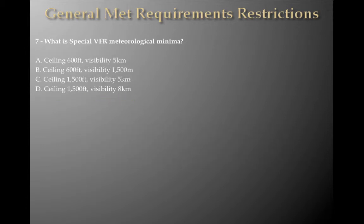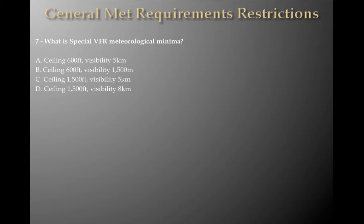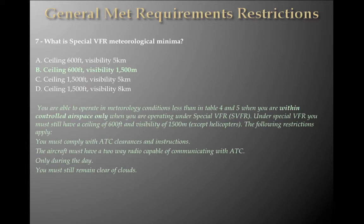What is the special VFR meteorological minima? Options: A — ceiling 600 feet, visibility 5K; B — ceiling 600 feet, visibility 1,500 metres; C — ceiling 1,500 feet, visibility 5K; D — ceiling 1,500 feet, visibility 8K. The answer is B — ceiling of 600 feet, visibility 1,500 metres. You are able to operate in conditions below Tables 4 and 5 when within controlled airspace only, when operating under special VFR. Under special VFR you must still have a ceiling of 600 feet and visibility of 1,500 metres.